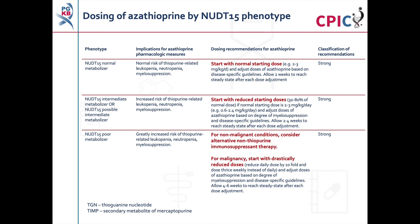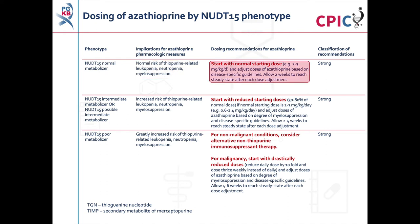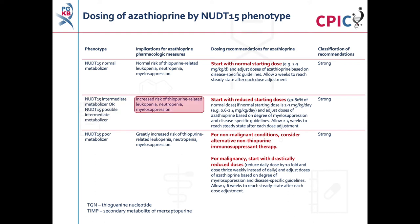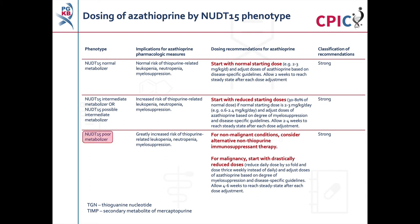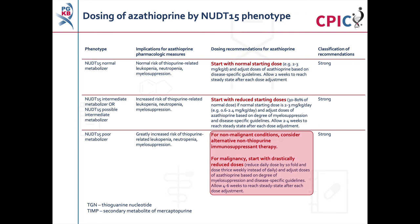These are the CPIC dosing recommendations for azathioprine by NUDT15 phenotype. Patients who are NUDT15 normal metabolizers are at a normal risk of thiopurine-related myelosuppression and can be given the normal starting dose of azathioprine. This is a strong recommendation. Patients who are NUDT15 intermediate metabolizers or possible intermediate metabolizers are at an increased risk of thiopurine-related myelosuppression. Alternative therapies should be considered for non-malignant conditions; in cases of malignancy, patients should be started at a drastically reduced dose. This is a strong recommendation.